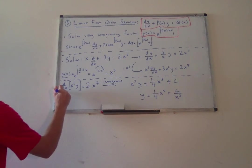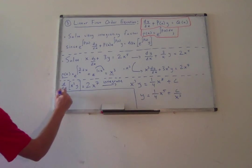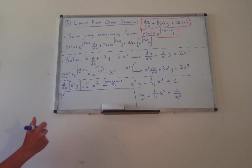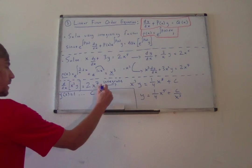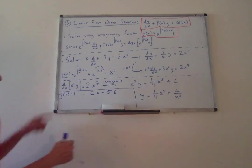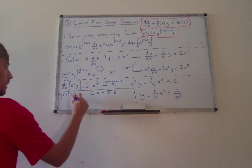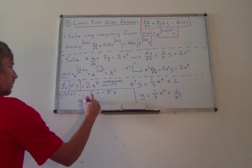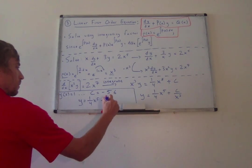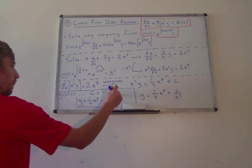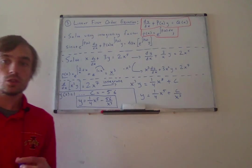I almost forgot the initial condition. Solving for y(2) equals 1, I get that C is equal to negative 56. This is just plugging in 2 for x and 1 for y, then solving. So you should get as a final solution, one-fourth x to the fifth minus 56 over x cubed. And that would be an example of a linear first-order equation.